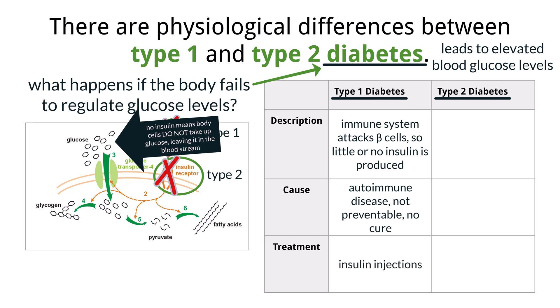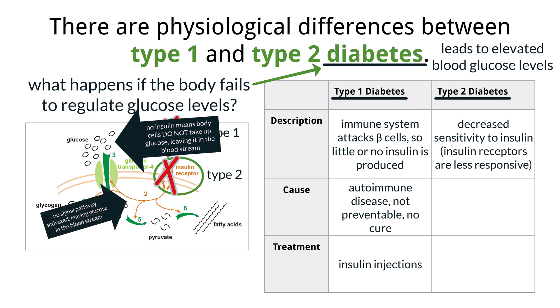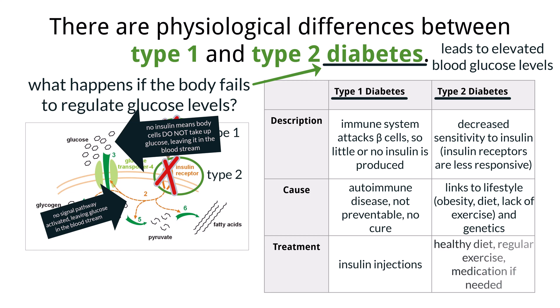In contrast, type 2 diabetes typically occurs in adults and is caused by insulin resistance, where body cells can no longer respond properly to insulin. If insulin receptors are not activated, the signal transduction pathway is not activated, meaning GLUT4 does not allow glucose to enter the cells. In general, the insulin receptors on the cells are no longer responsive, and over time the pancreas may also produce less insulin. Major risk factors include obesity, lack of physical activity, poor diet, and genetic predisposition. Type 2 diabetes can often be treated with lifestyle changes such as a healthy diet, regular exercise, and weight control, along with medication if needed.